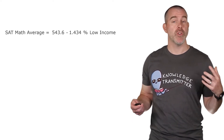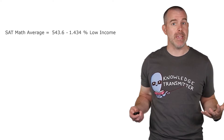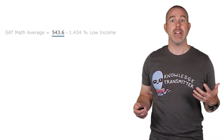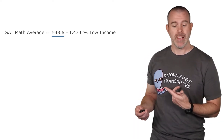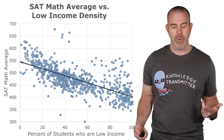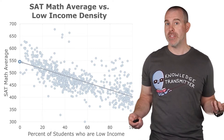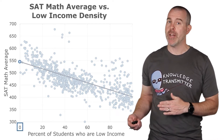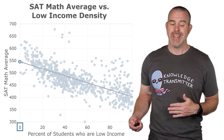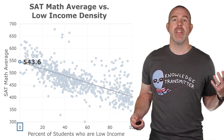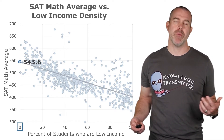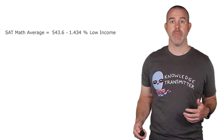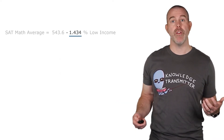Let's talk about those two numbers and what they actually mean. The 543.6 is the y-intercept. Looking at the graph, that means when there are no low income students in a school, the line predicts the SAT math average for that school would be 543.6.